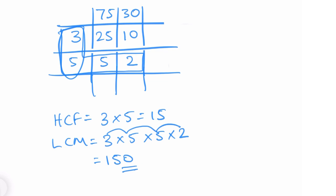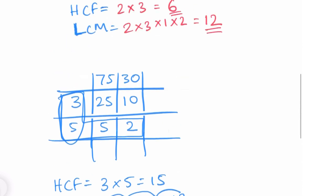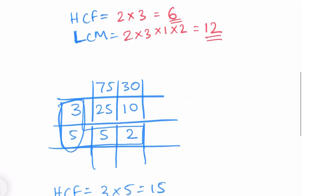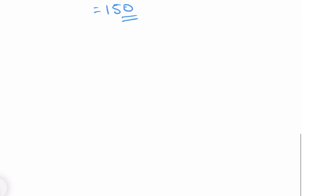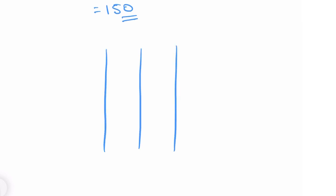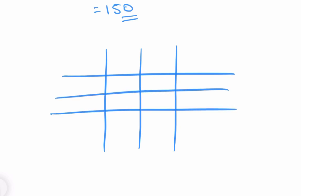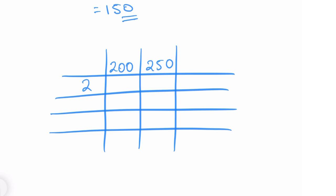The highest common factor of 75 and 30 is 15 and the lowest common multiple is 150. The next pair of numbers is 200 and 250 — I'd like you to have a go at this. Draw the grid first. Note that two goes into both since they're both even, so pause the video and try it.